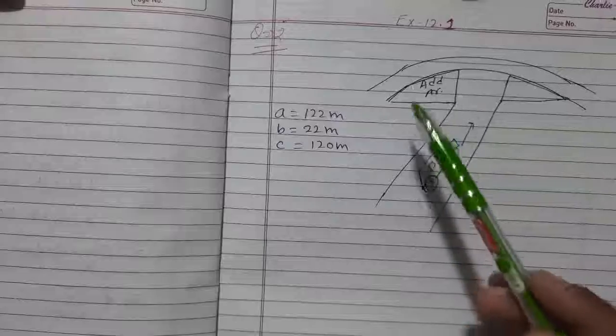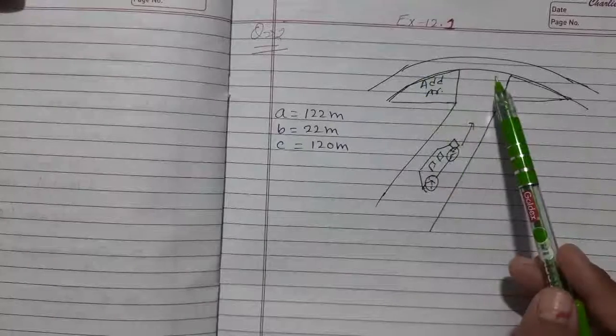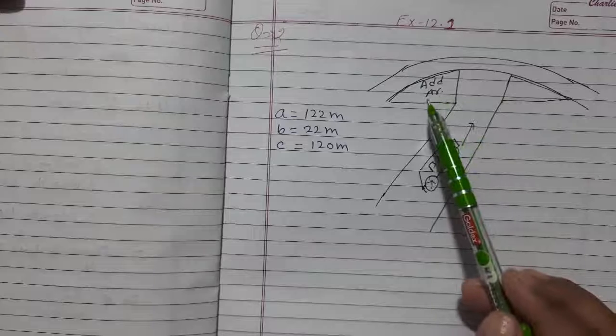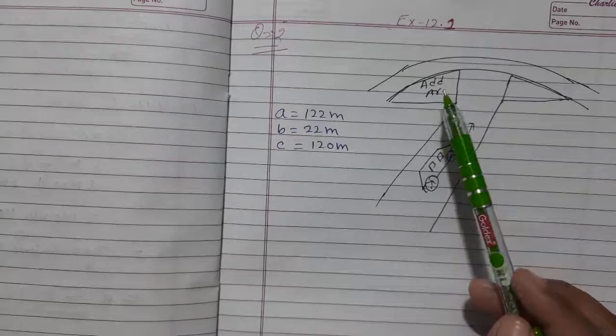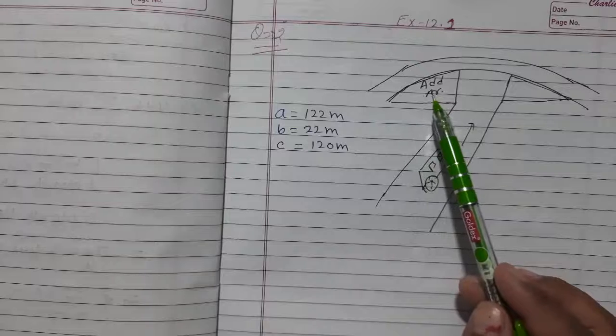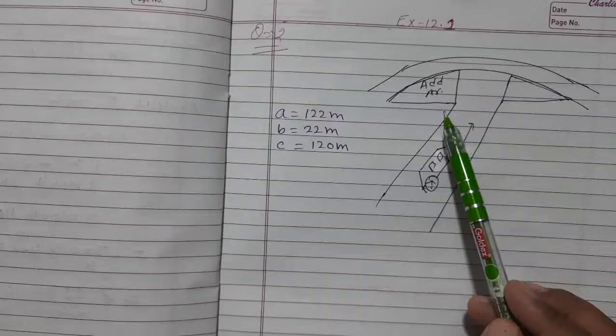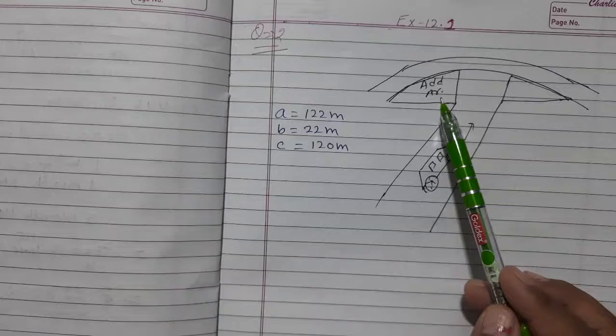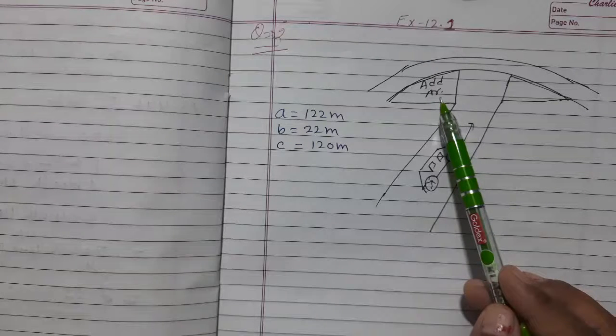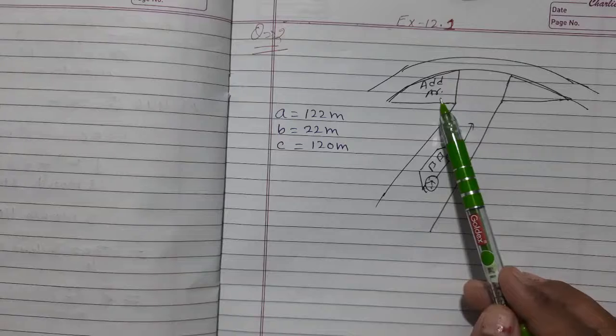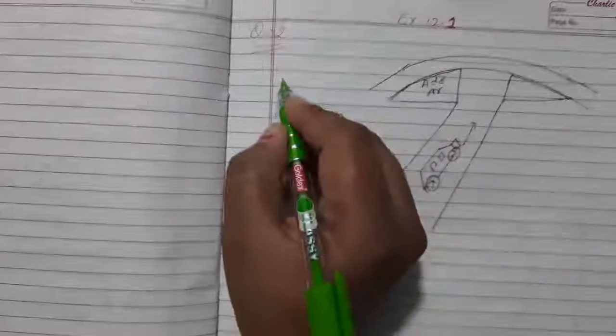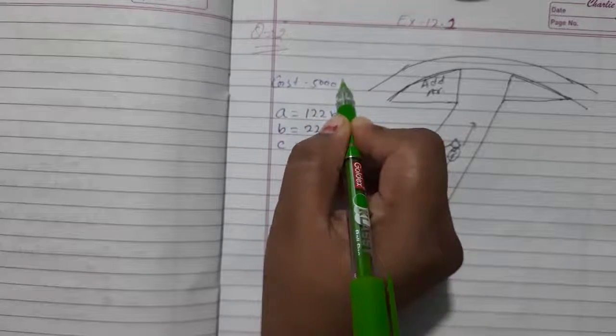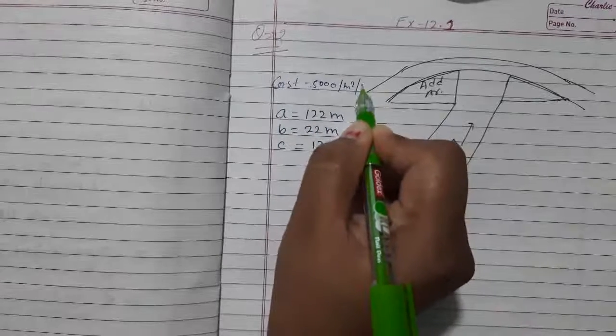So according to Question Number 2, there is a flyover and below the flyover there is a rectangular part. And a company wants to put some advertisement in this rectangular area. The costing of the rectangular area is at Rs. 5000 per meter square per year.